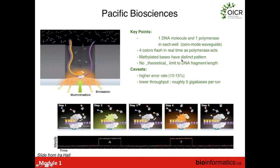The PacBio instrument is able to sequence 10 to 20,000 base pairs of DNA at once — the read length can be up to 20,000 bases. But because we're making single molecule measurements, there's a much lower signal-to-noise ratio, and that means the error rate of the sequencer is much, much higher.